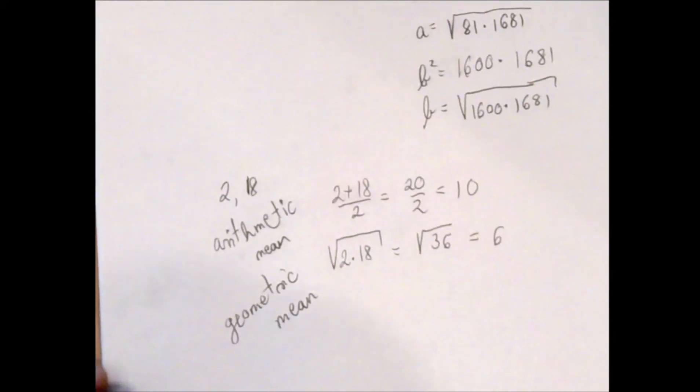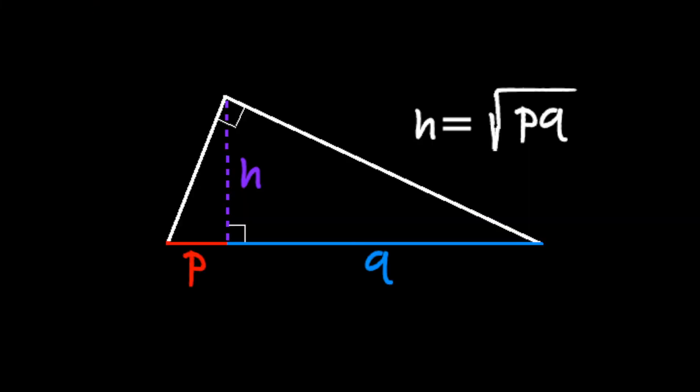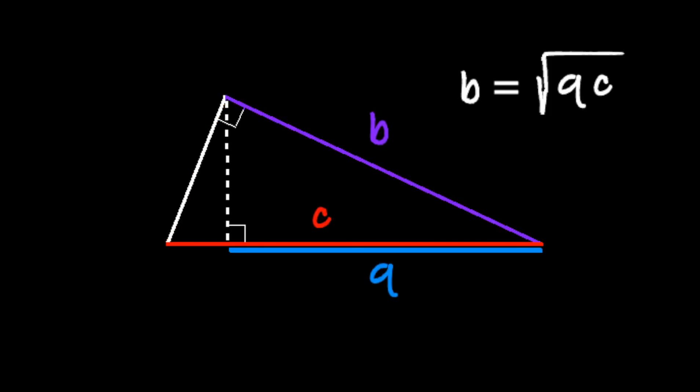It's called the geometric mean probably because it comes up a lot in geometry. For example, here h is the geometric mean of the two parts of the hypotenuse that h splits it into, and a is the geometric mean of 81 and the whole hypotenuse, and b is the geometric mean of 1600 and the whole hypotenuse.